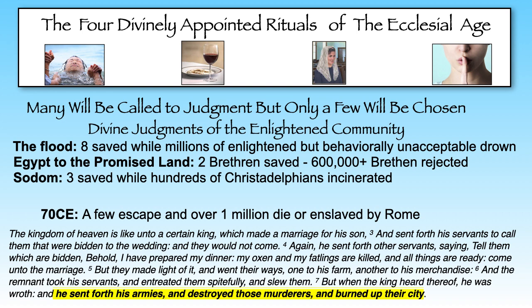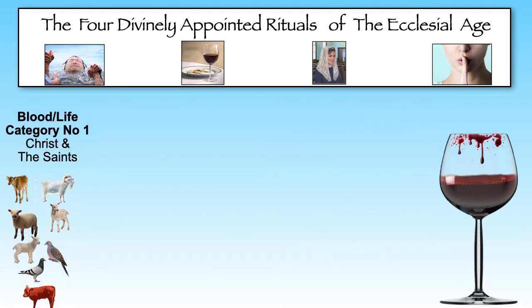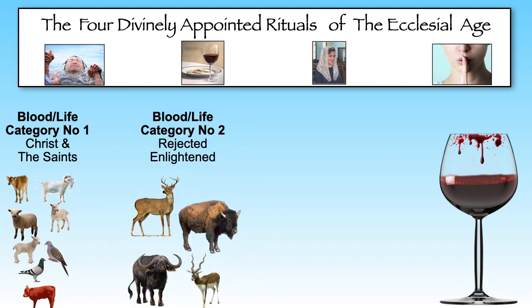The same lesson is demonstrated within the wine component of the memorial service ritual. We have these three animal categories distinguished on the basis of their blood. First is the blood of those eight sacrificial animals appointed by God representing Christ and the saints. Second is the clean but wild animals whose blood was never permitted at the altar but had to be poured into the dust and covered by dust — shadow projecting the many within the enlightened community who qualify as being cleansed but will not be chosen by Christ at his judgment.